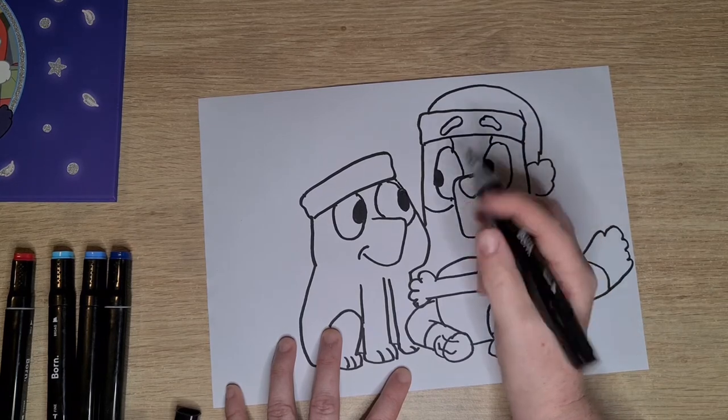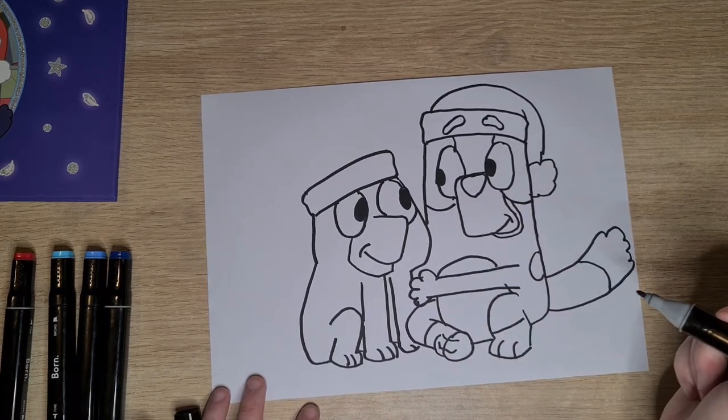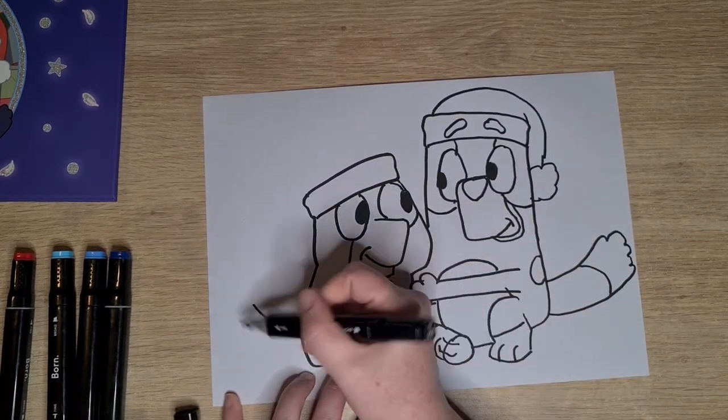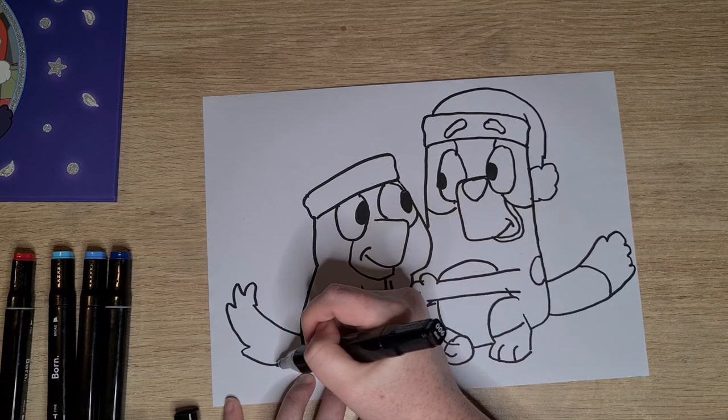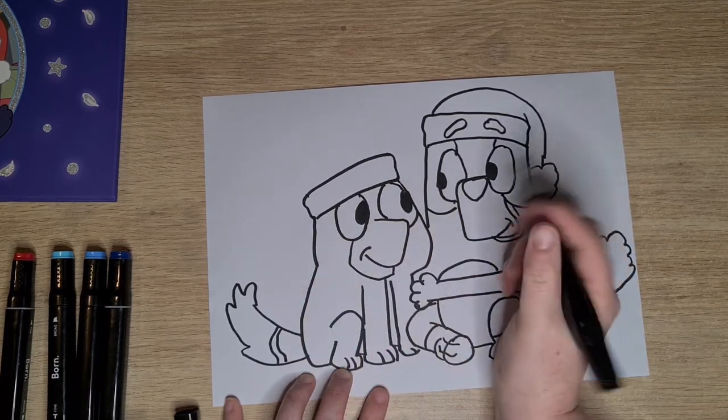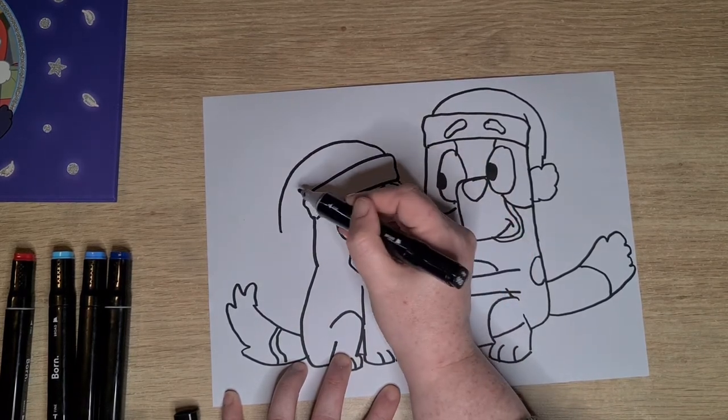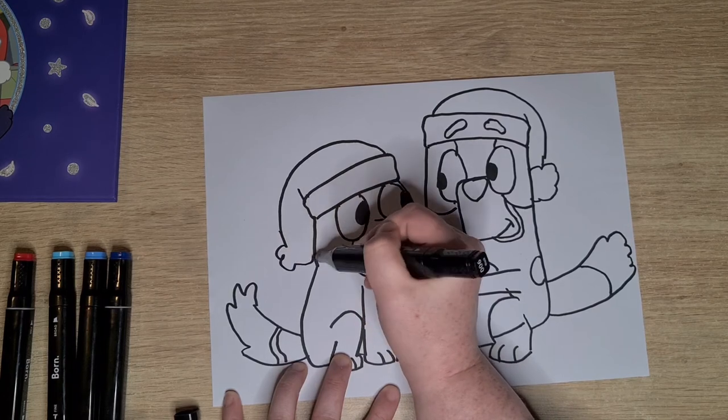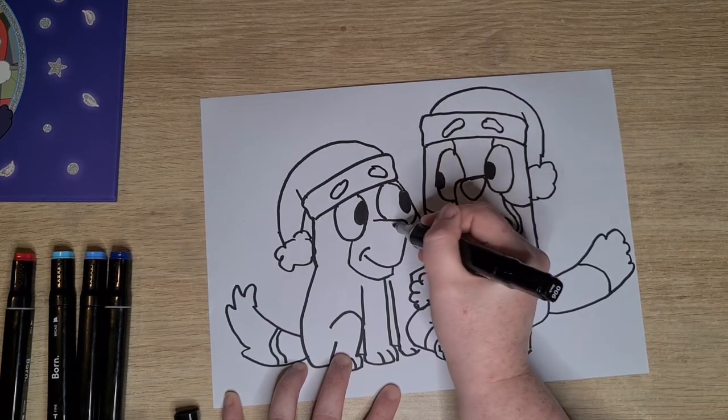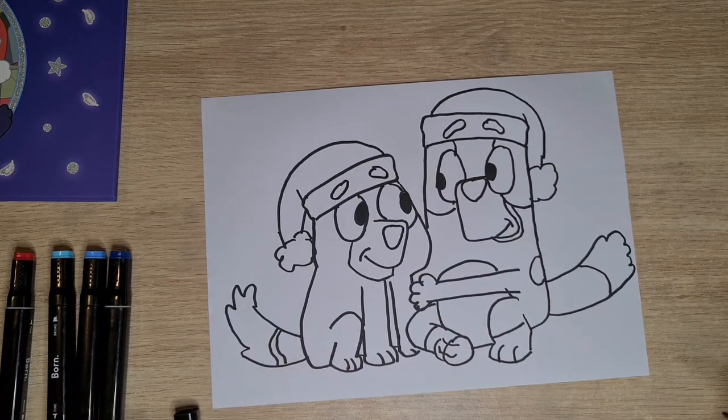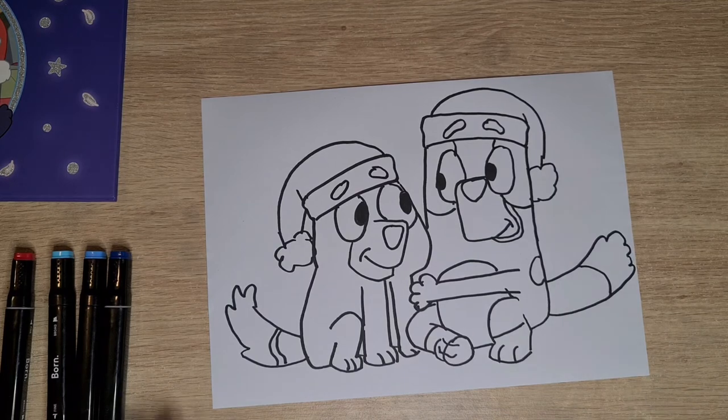So there we have Sox. Sox's tail. A bit more bushy than Bluey's. And we'll do the top of Sox's hat. There we go. And Sox's eyebrows. Just finishing off with Sox's triangle nose. And there we go. So we have Bluey and Sox together wearing their Santa hats.